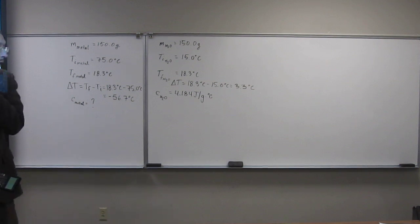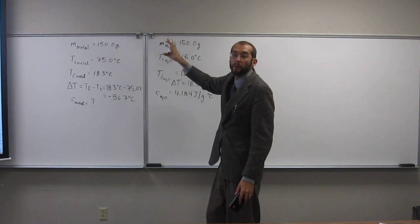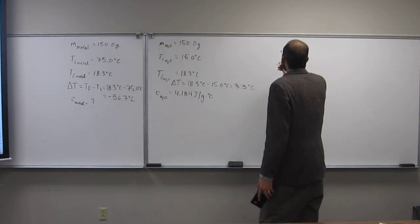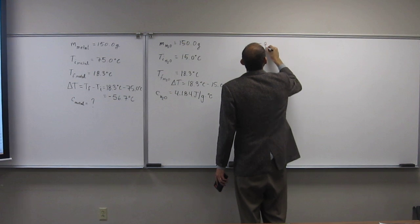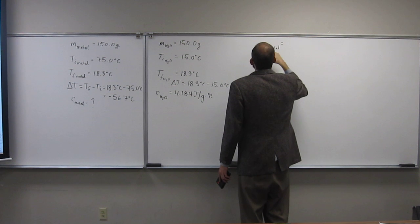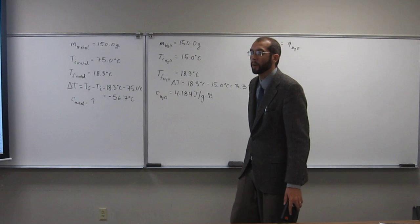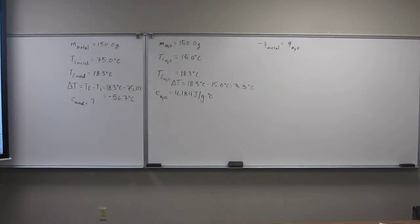Okay, so the other thing you know about systems and surroundings, right, is that if heat flows out of the system, it flows into the surroundings. Is everybody okay with that? So in other words, our system we can think of as the hot metal piece, right, and the surroundings being the water or the coffee cup calorimeter. So in other words, negative heat from the metal is equal to the positive amount of heat that's going into the calorimeter or into the water. Is everybody okay with that setup? Hopefully.